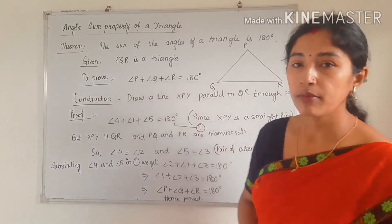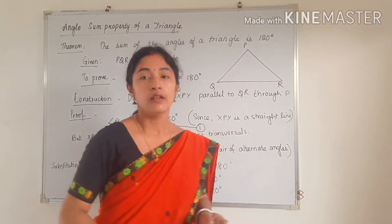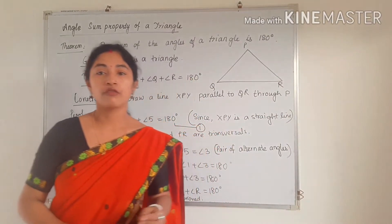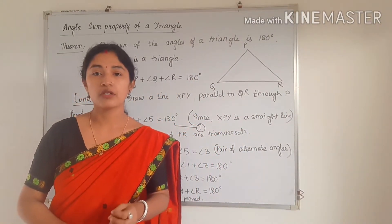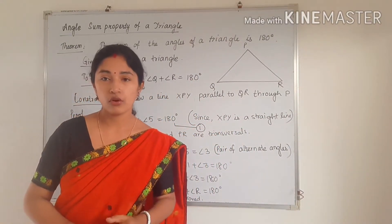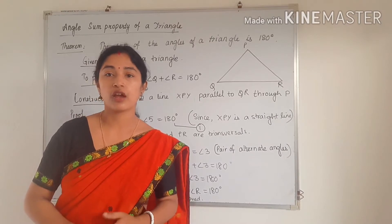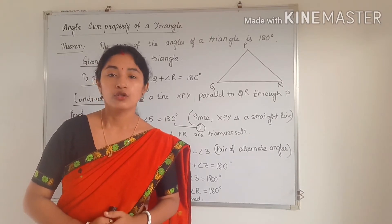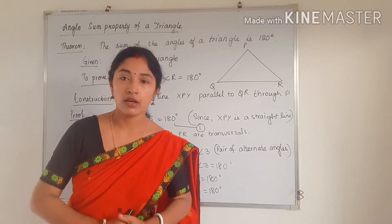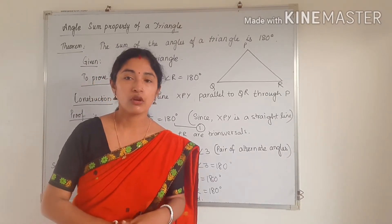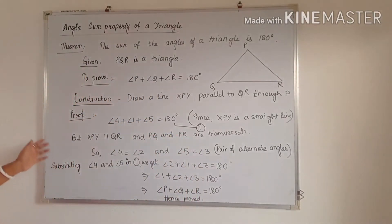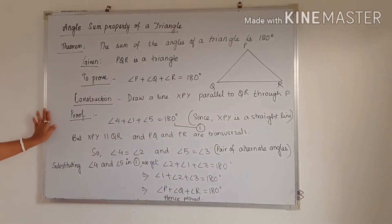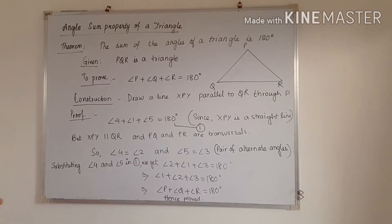What do we mean by angle sum property of a triangle? That means if we add all the angles, the sum of all the angles of a triangle should be equal to 180 degrees. So let us read the theorem first: the sum of the angles of a triangle is 180 degrees.